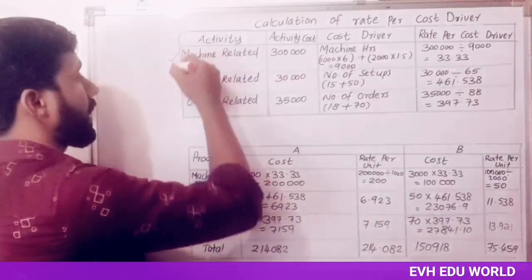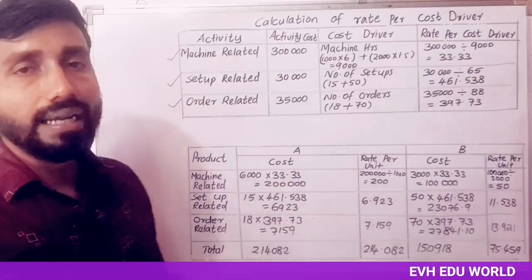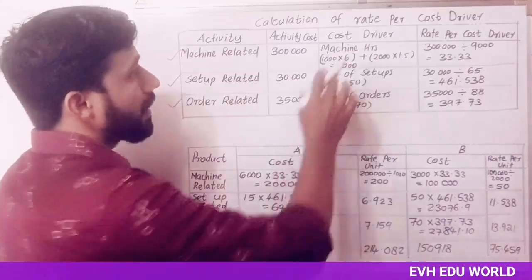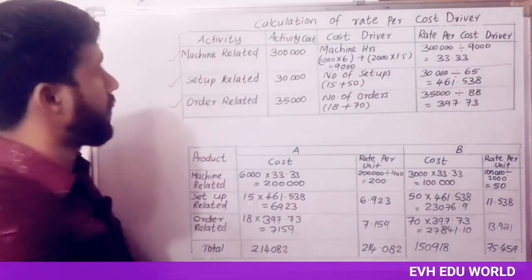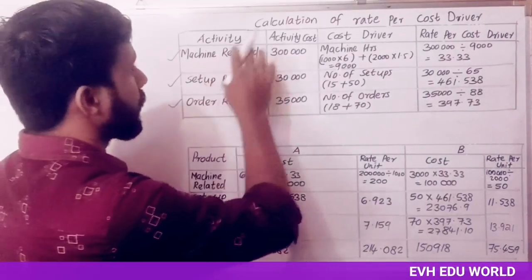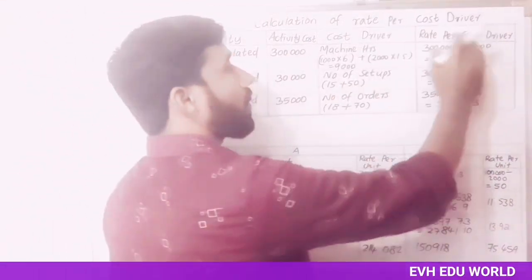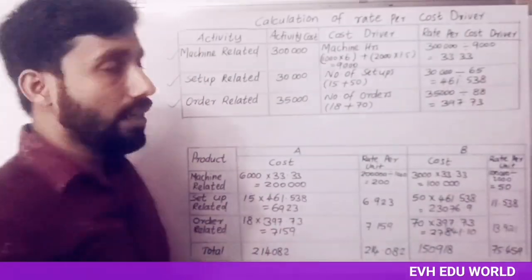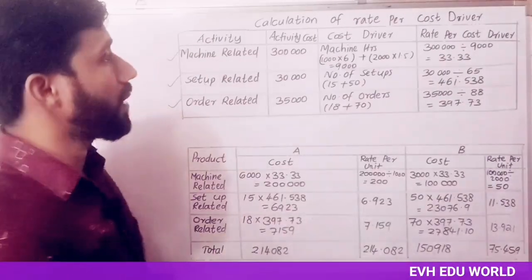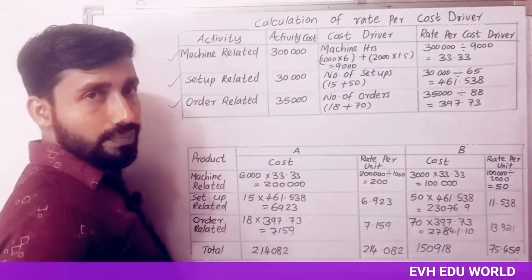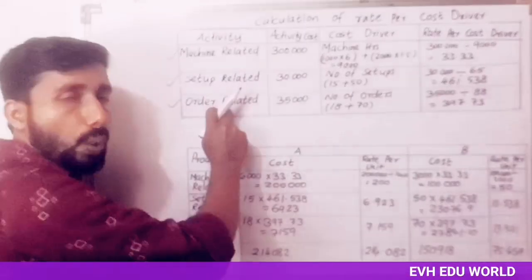There are three activities: machine-related activity, setup-related activity, and order-related activity. We calculate the rate per cost driver. The columns are: activity, activity cost, cost driver, and rate per cost driver.